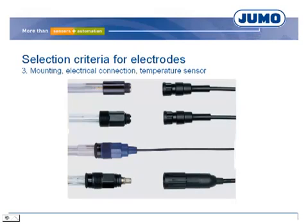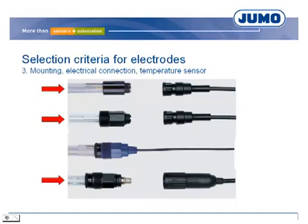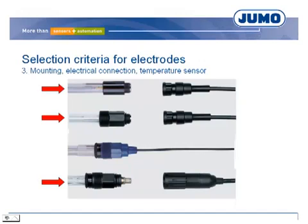Combination electrodes are available with plug cap or screw cap. The electrical connection can be realized either via a plug system or with a fixed cable. Electrodes with resistance thermometer are also available. It is very important that the plug contact is always dry — even a little humidity can cause incorrect measurement due to the high-resistance measuring circuit.